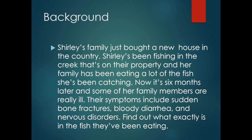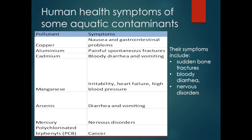Find out what exactly is in the fish that they've been eating. Use this table to figure out what is in the fish. Remember the symptoms — they're listed. The fish Shirley has been catching are contaminated with aluminum, cadmium, and mercury. Notice that it isn't just one contaminant. There could be several contaminants in one food source, causing several different health issues.